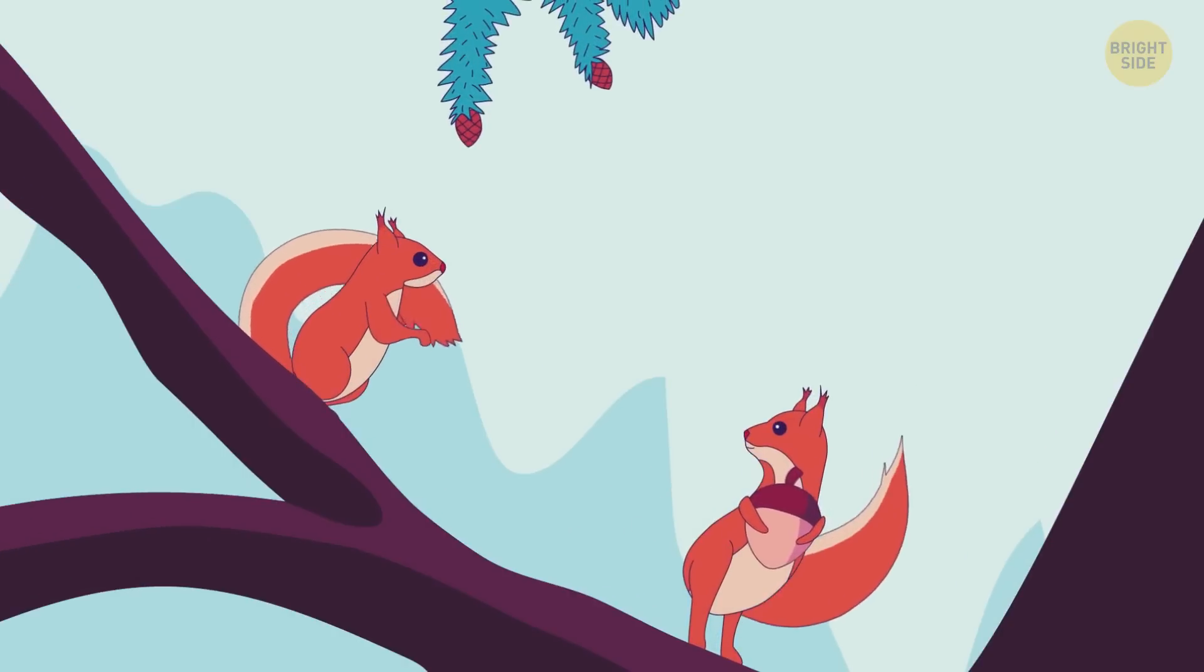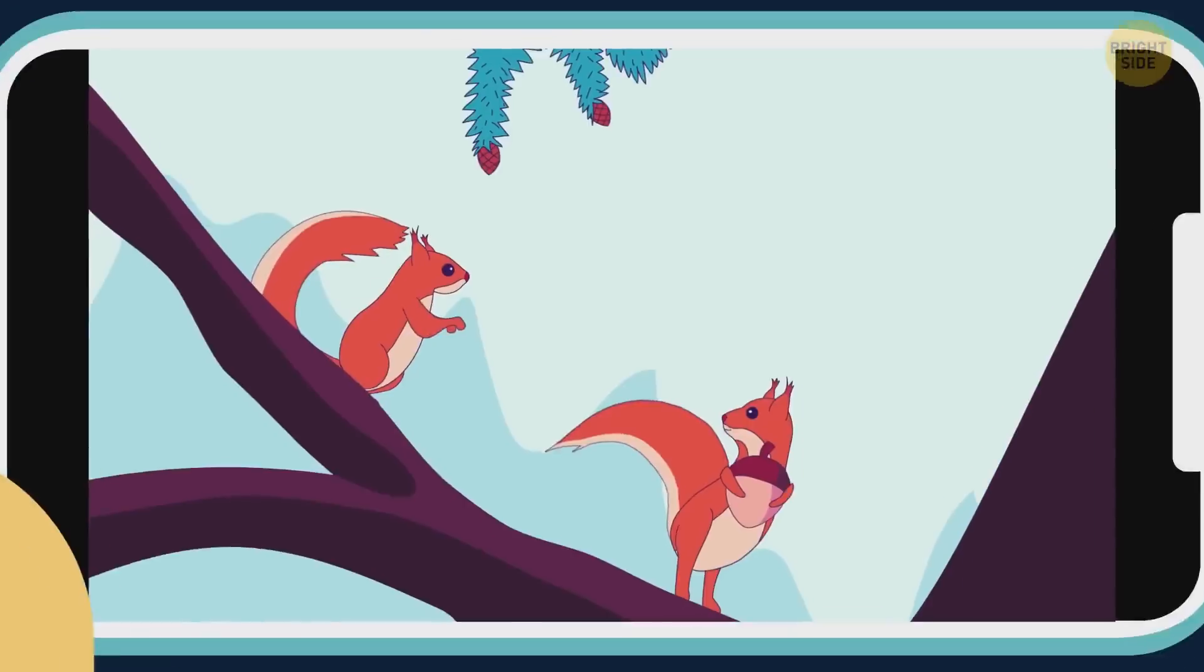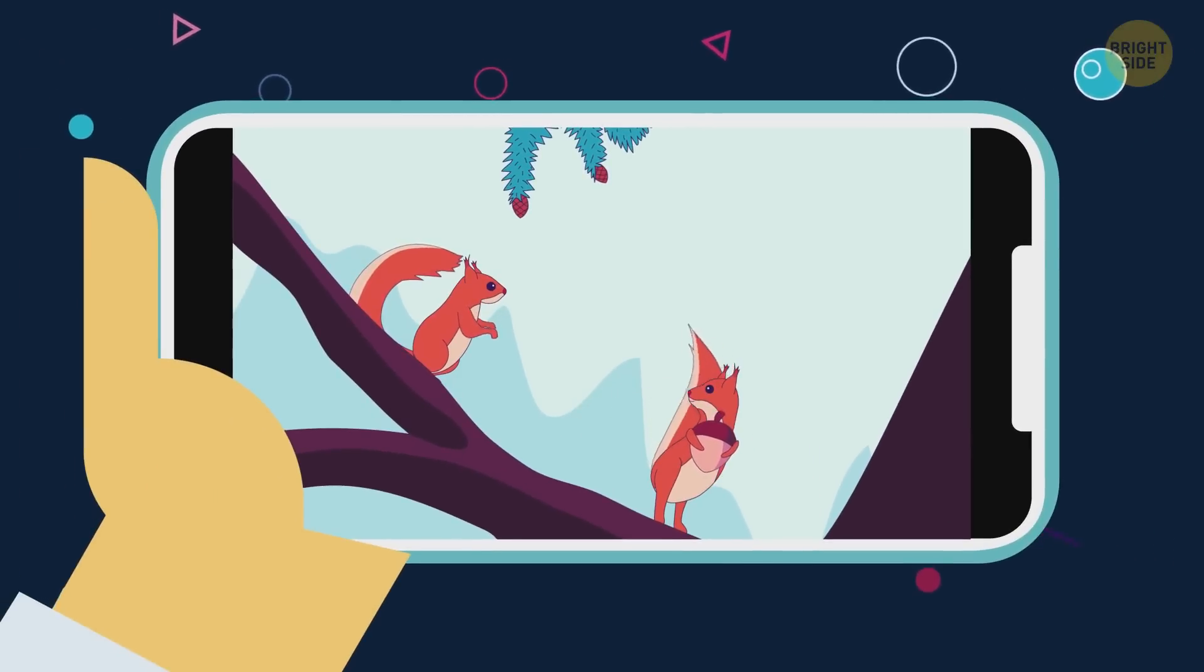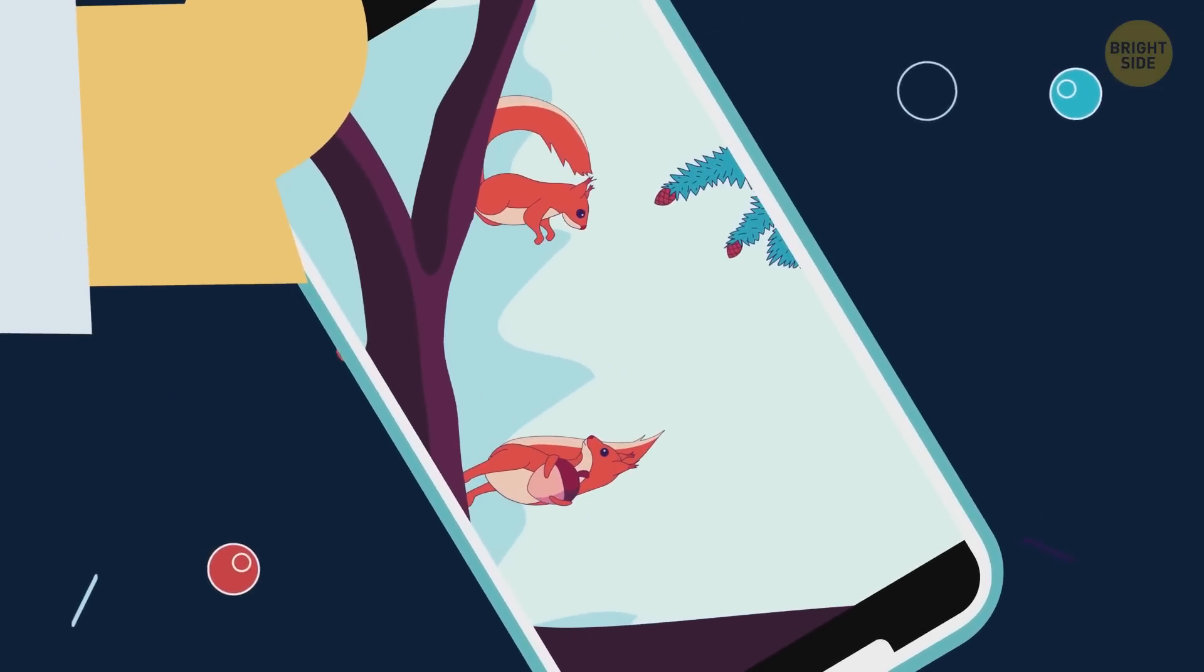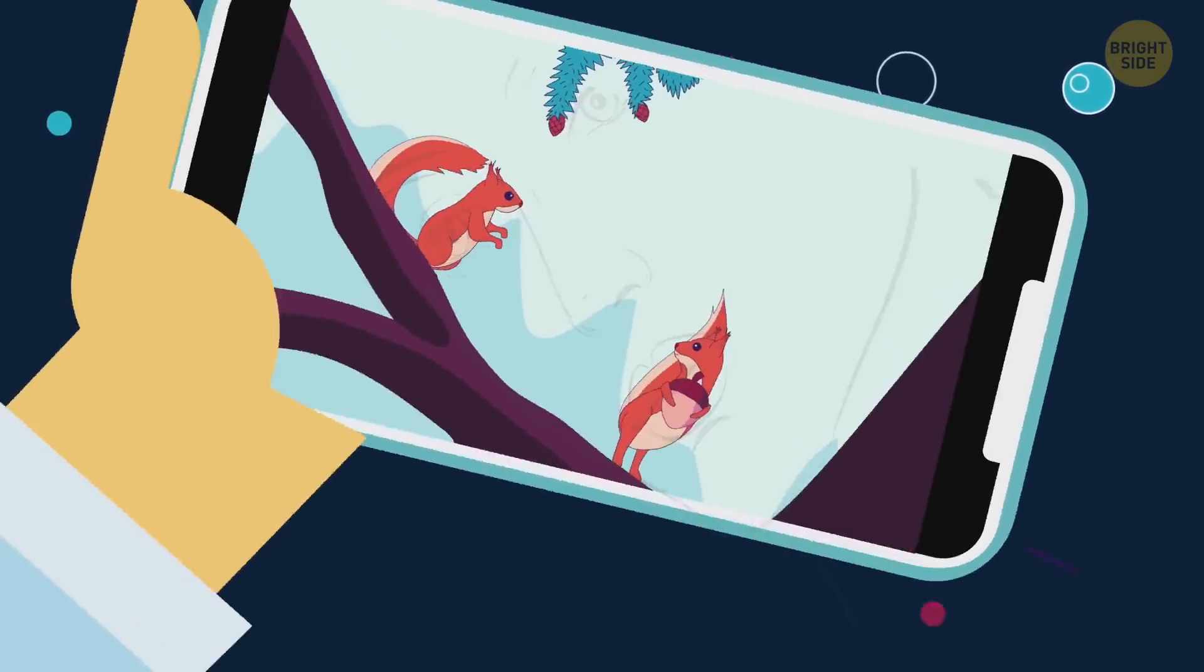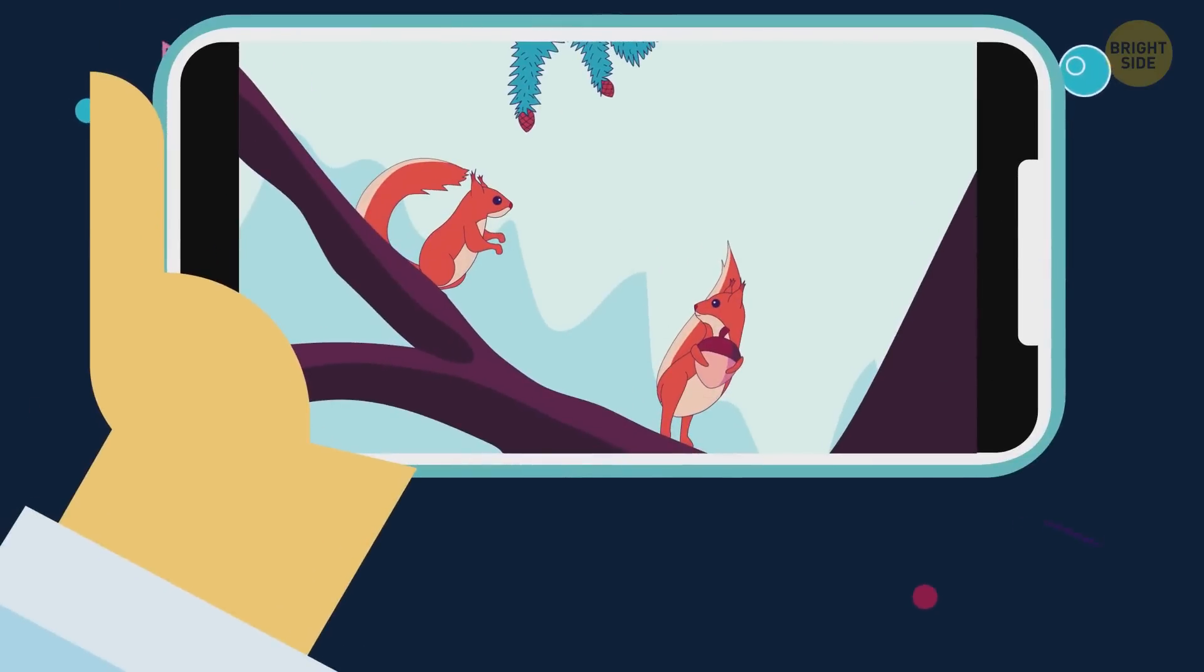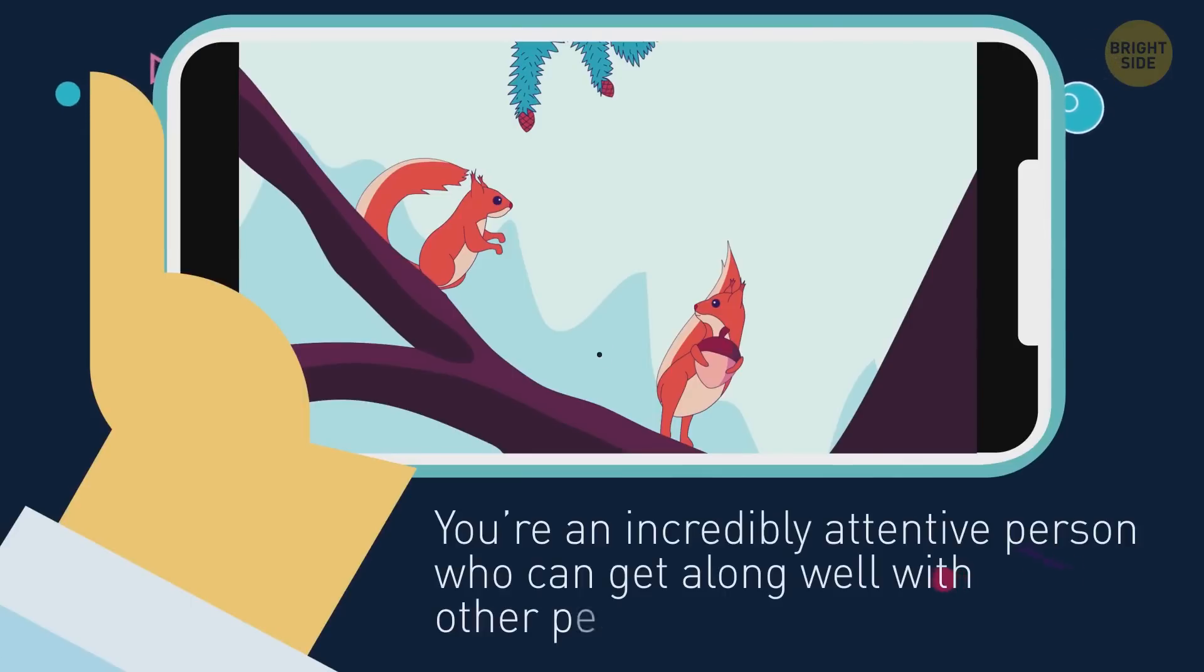This is a test for Super Sherlock. Of course, it's two squirrels, right? Well, that means you're pretty lazy, and you don't get too much into details. Now, tilt your head a little to the left. Now, you can see a woman's face. But if that's what you saw from the beginning, then you're an incredibly attentive person who can get along well with other people.